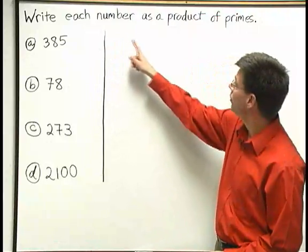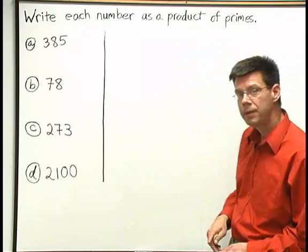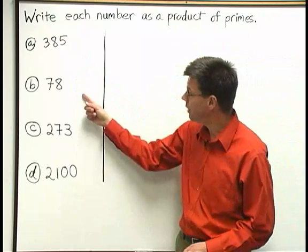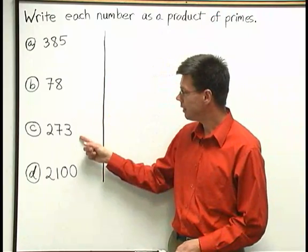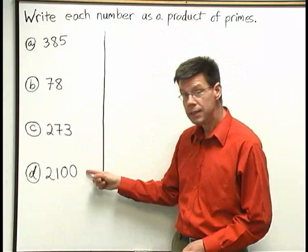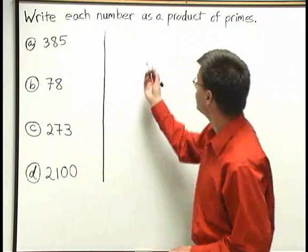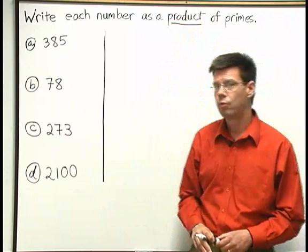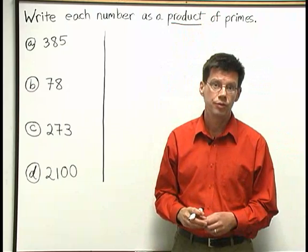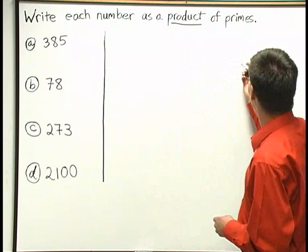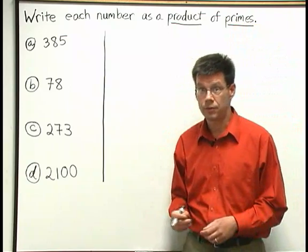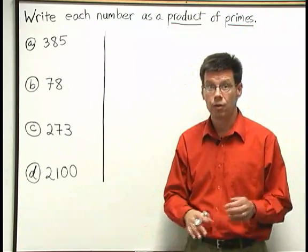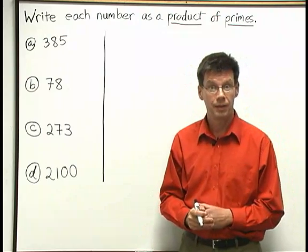Write each number as a product of primes. The numbers we're going to be working with are: a) 385, b) 78, c) 273, and d) 2100. We want to write each number as a product — a product means a multiplication problem. We're going to break down these numbers using multiplication. Primes means that we want our final answers to contain prime numbers only. In the last line, we're just going to have prime numbers. Let's go ahead and get started.